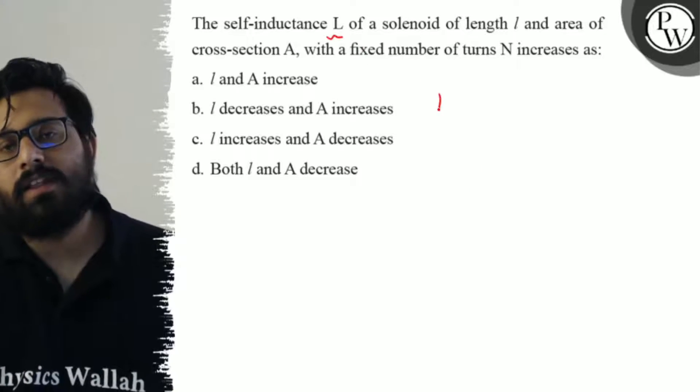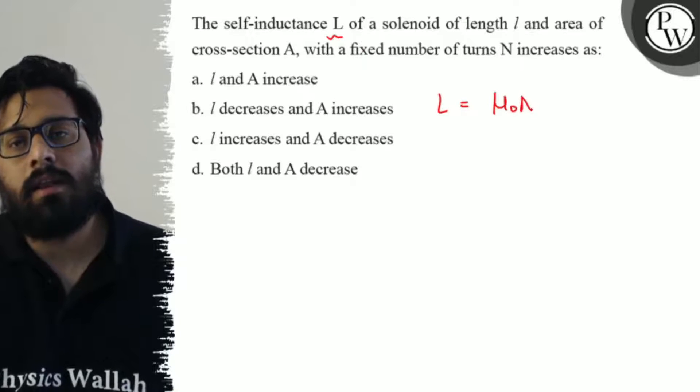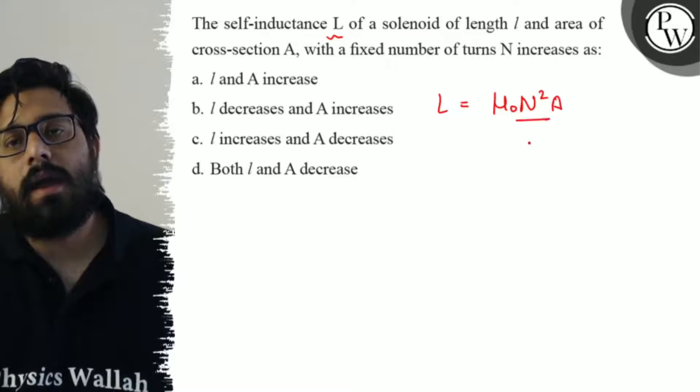Here, the value of self-inductance for the solenoid, we all know the value: mu naught n square A by L.